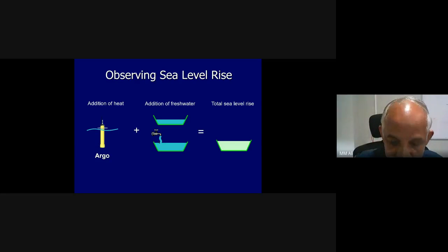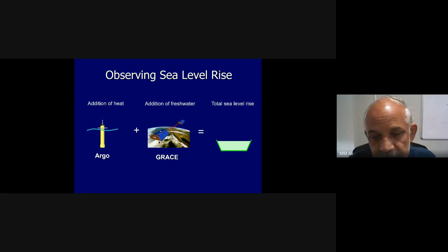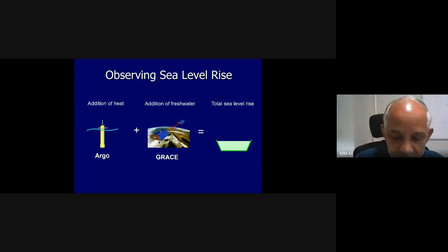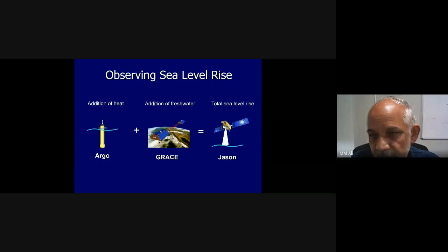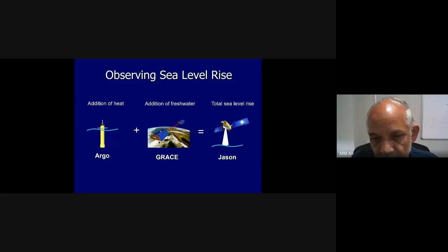The GRACE mission — Gravity Recovery and Climate Experiment — allows us to measure mass changes. From satellite altimeters like Jason, we get the total sea level rise, which is the sum of heat addition and fresh water addition. By 2007, Argo floats were able to provide the first realistic estimates of global distribution of heat in the upper ocean. The Argo float program started in 2002, and by 2007 they could map the entire global ocean.